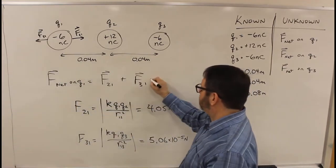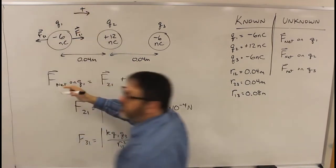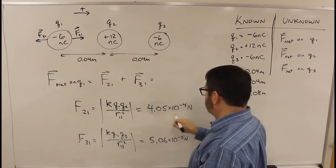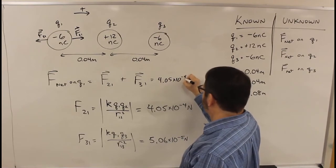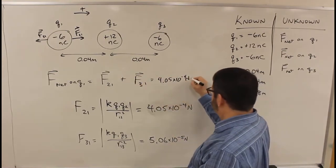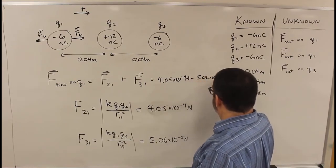So when I add them, if I call to the right the positive direction, F2,1, now this is positive. So this is 4.05 times 10 to the minus 4 newtons, minus, because it's to the left, minus 5.06 times 10 to the minus 5 newtons.